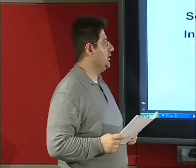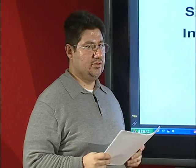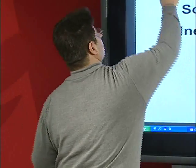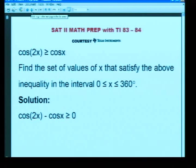Today we will be solving a trigonometric inequality with the TI-83-84 graphing calculators in the degree mode. Let us imagine that we are given such an inequality. We are required to find the values of x for which cos(2x) is greater than or equal to cos(x) and x is between 0 and 360 degrees inclusive.